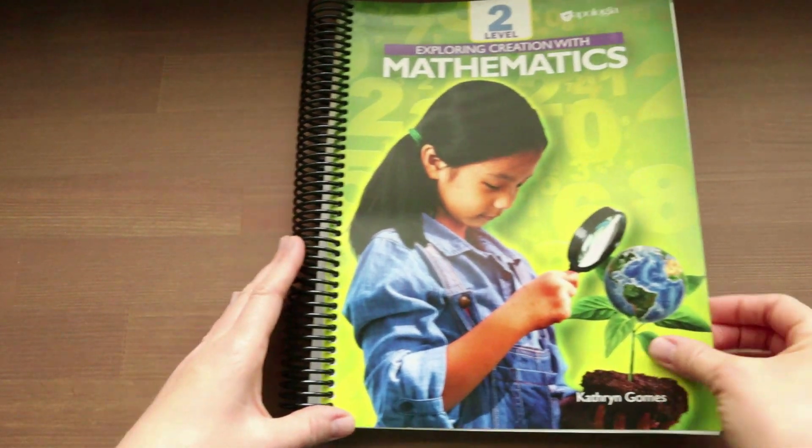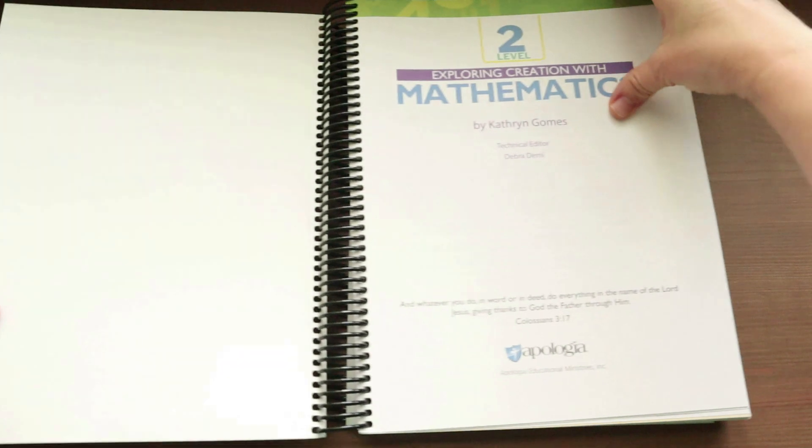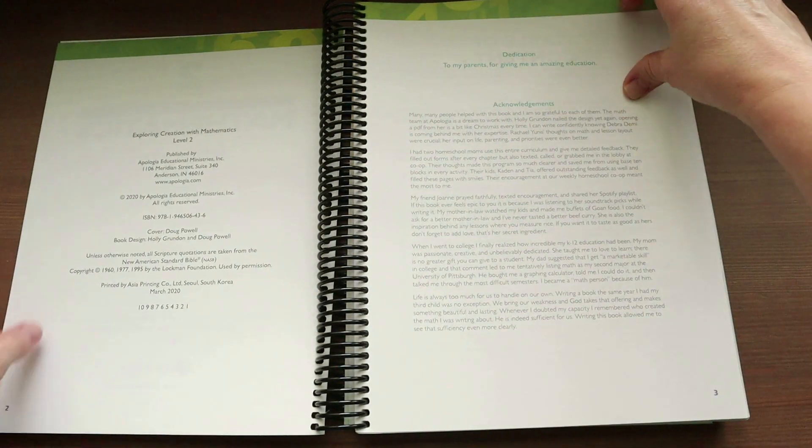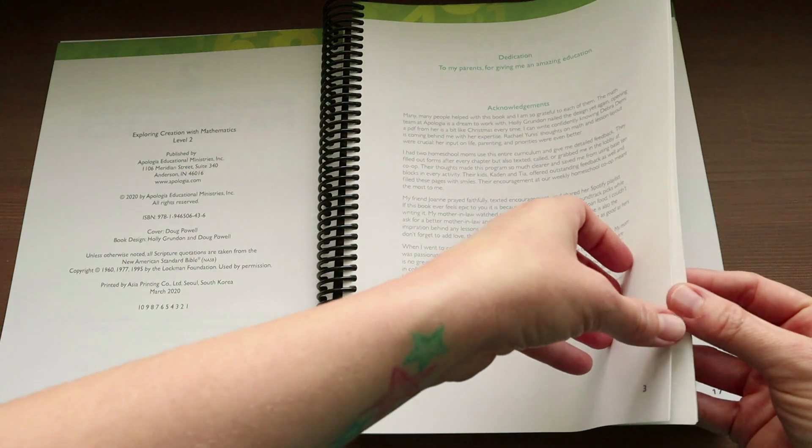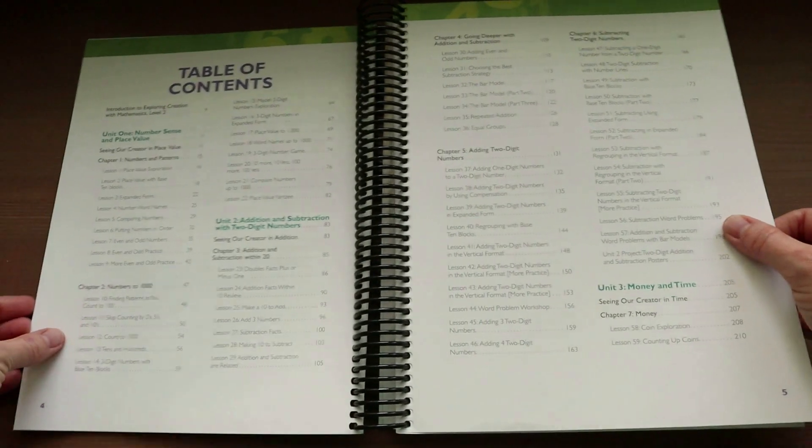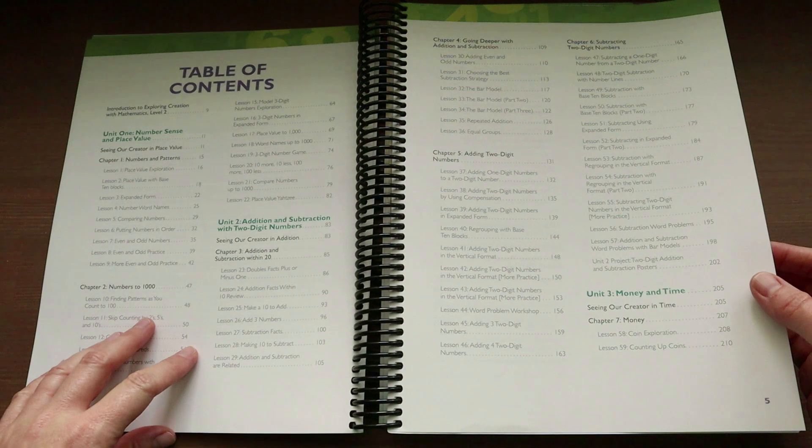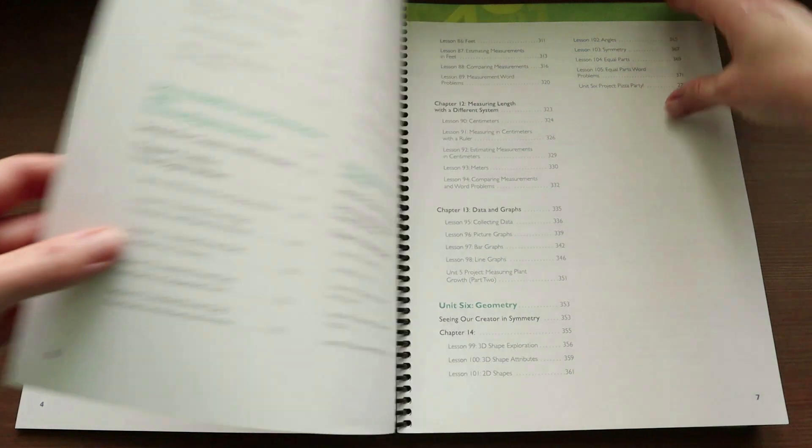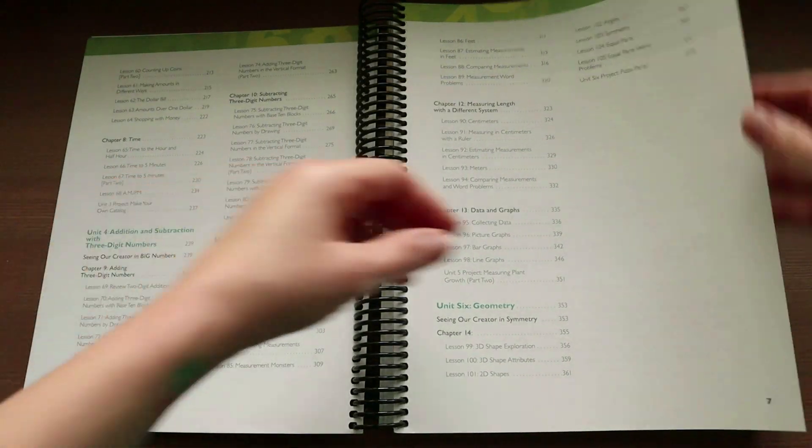All right, this is Apologia Math Level 2. This is the student book. When you open it, you get the acknowledgments page and then the table of contents. It'll have all of the topics that your child is going to be covering and what number of pages that the lessons correspond to.